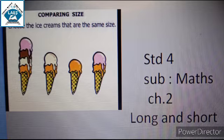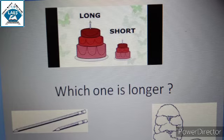Which one is longer? There are 2 cakes. The number 1 cake is longer and number 2 cake is shorter. And there are 2 pencils. One pencil is longer and another pencil is shorter. There are 2 trees. The one tree is longer and another tree is shorter in height.